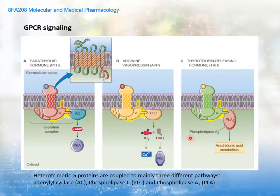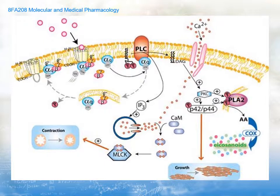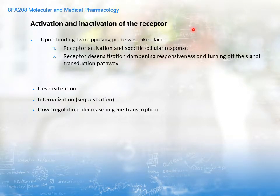The third example shown here is actually a misleading example. In this case, there appears to be an alpha subunit leading directly to activation of PLA2, phospholipase A2. In reality, we now know this direct interaction does not exist. What's actually happening is that PLA2 activation occurs through prior activation of protein kinase C via diacylglycerol. So the pathway is: alpha-Q activates PLC, which forms diacylglycerol, which activates and phosphorylates PKC, and PKC then phosphorylates and activates PLA2.